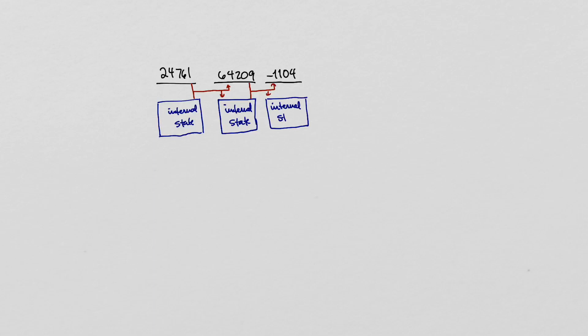For example, the most widely used pseudo-random number generator, the Mersenne Twister, has a period of 2 to the 19,937 minus 1.